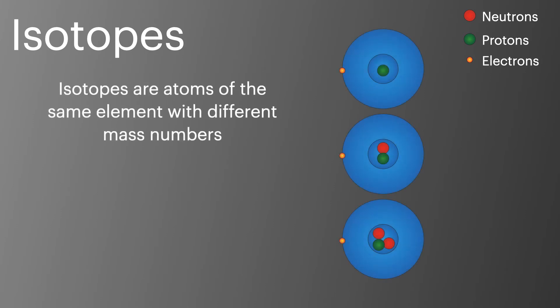Isotopes of the same element have different mass numbers. This means that they have the same number of protons as it's the number of protons which makes an atom a specific element. They do, however, have a different number of neutrons, which is what changes their relative atomic mass.